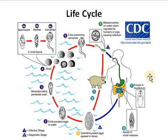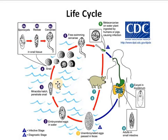Now we will discuss the life cycle of Fasciolopsis buski. As already mentioned, Fasciolopsis buski stays in the small intestine of humans and in the intestine of pigs. It releases eggs with the feces of humans and pigs. When feces containing unembryonated eggs come in contact with fresh or warm water, the eggs undergo embryogenesis and hatch in 5 to 8 weeks. A ciliated miracidium larva is released from the embryonated eggs. The miracidium larva enters the body of the next intermediate host — snails, mostly of the Planorbis and Segmentina genera.